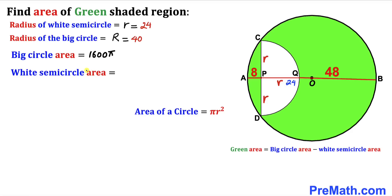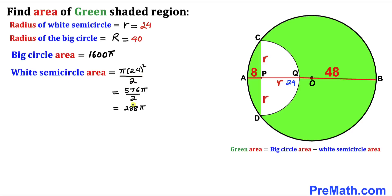Now let's calculate the area of the white semicircle whose radius is 24. This is pi times 24 squared, divided by 2 since we are dealing with a semicircle. Simplifying, the area of the white semicircle is 288 pi.